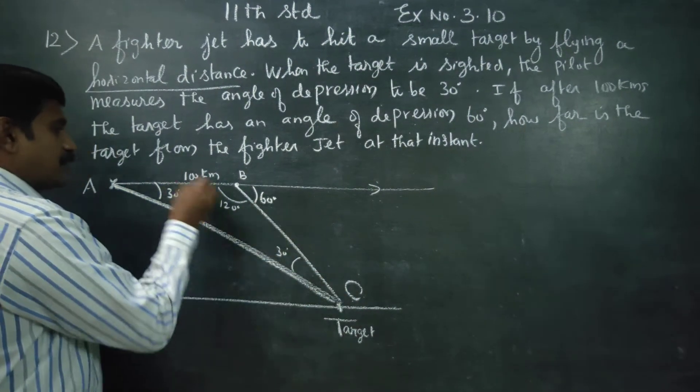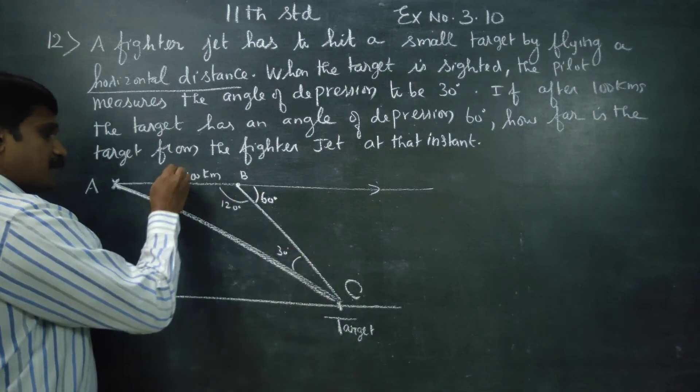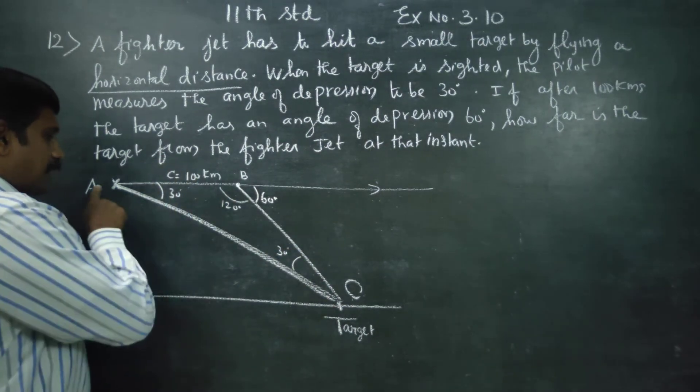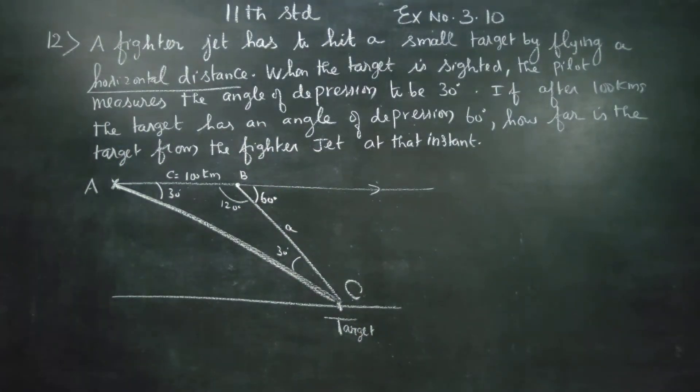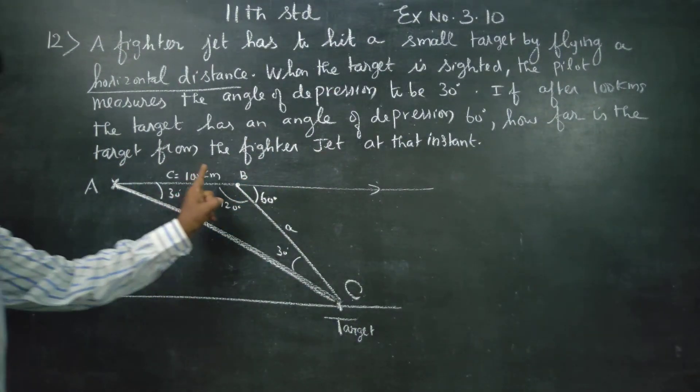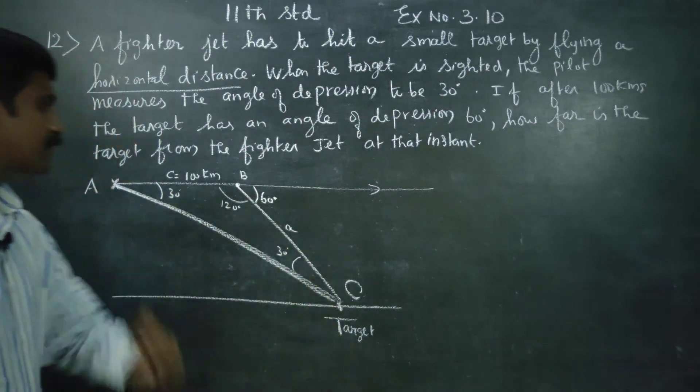Small c corresponds to angle C. Capital letter angle A corresponds to small letter a. Similarly for the other angles.